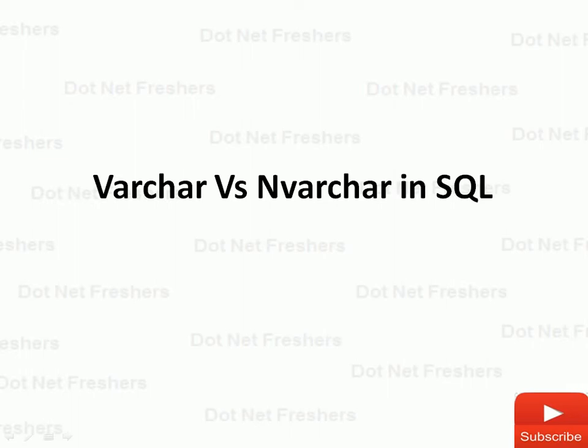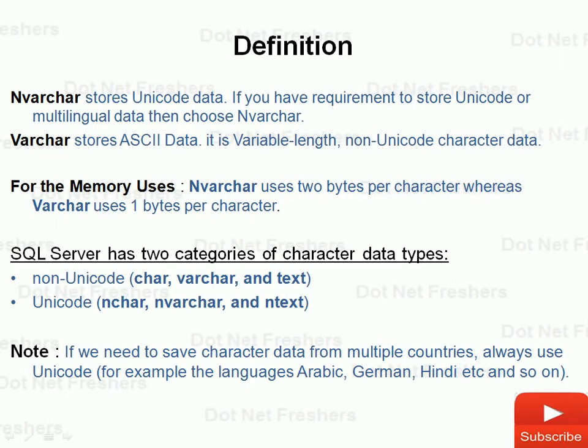Here is a simple definition: NVARCHAR stores Unicode data. If you have the requirement to store Unicode or multilingual data, then we choose NVARCHAR. VARCHAR stores ASCII data — it is variable-length, non-Unicode character data. For memory consumption, NVARCHAR uses two bytes per character and VARCHAR uses one byte per character. This is the basic and main difference between them.